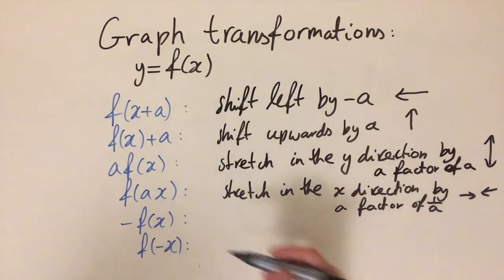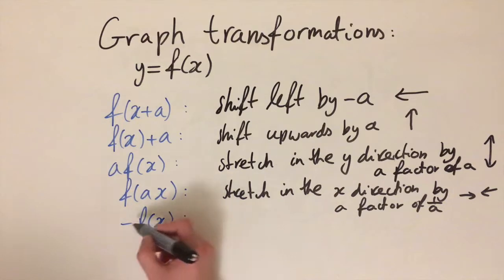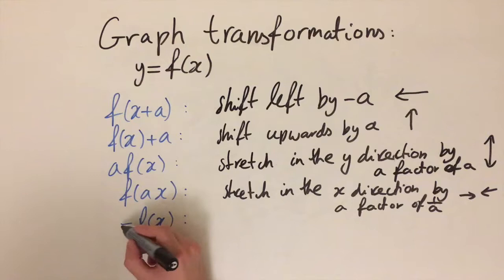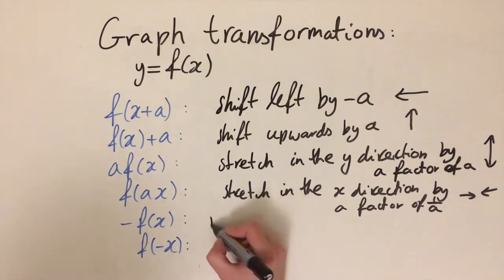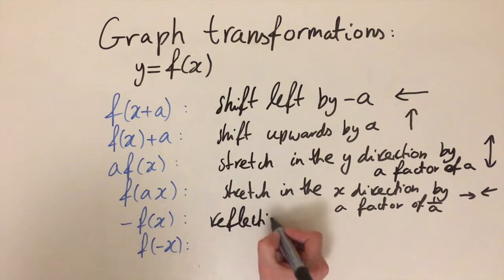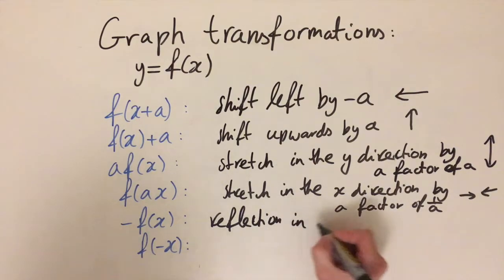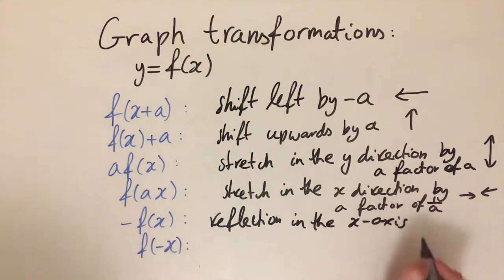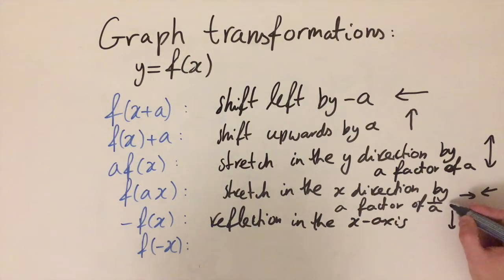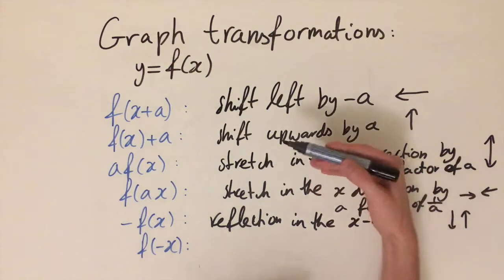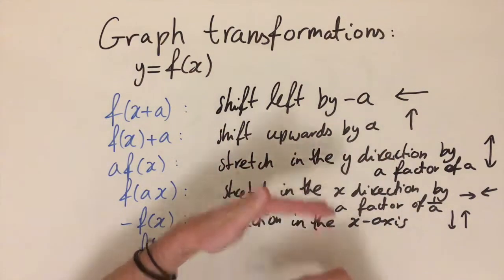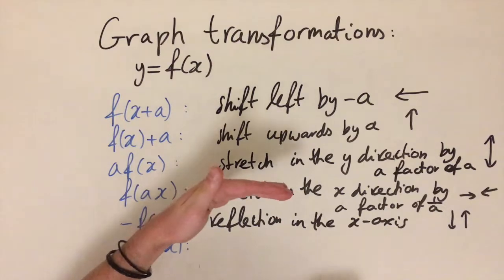Okay, now we've got two left and these involve negative signs. These are going to correspond to reflections. So if we put a negative outside the function, -f(x), this is a reflection in the x-axis. What we're doing is we're replacing the top with the bottom and the bottom with the top—we are switching everything above the x-axis and reflecting it down below the x-axis, and the same for the bottom we're reflecting up to the top.